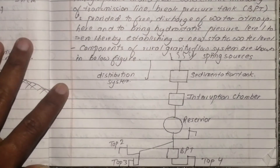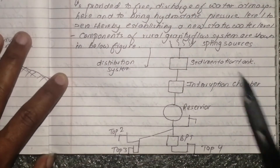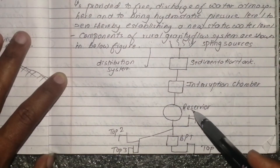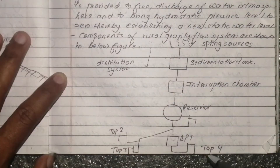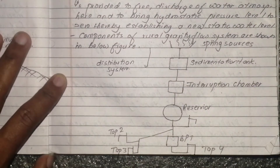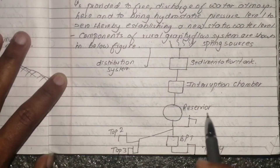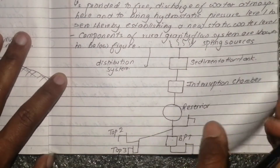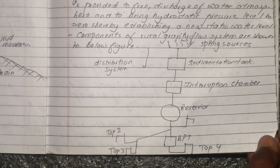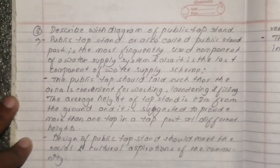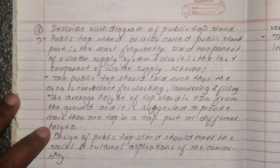The components of the gravity water supply system include: sedimentation tank, interruption chamber, reservoir, break pressure tank, Tap 4, Tap 1, and Tap 2. This is the distribution system figure, showing the full gravity water supply system.